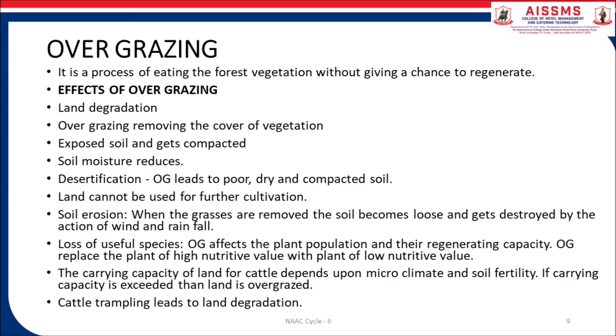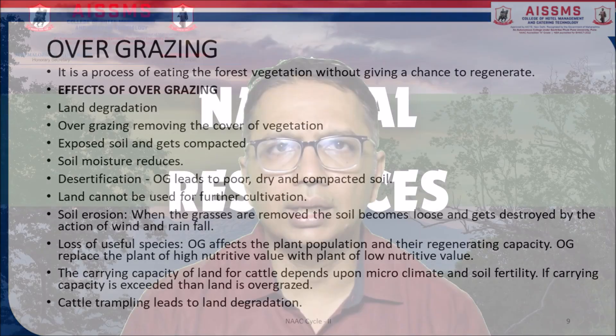Soil erosion — when the grazing cover is removed, the soil becomes loose and gets destroyed by the action of wind and rainfall. Loss of useful species — overgrazing affects the plant population and their regeneration capacity. Overgrazing replaces plants of high nutrient value with plants of low nutrient value. The carrying capacity of land for cattle depends upon microclimate and soil fertility. If carrying capacity is exceeded, then land is overgrazed. Cattle trampling leads to land degradation.